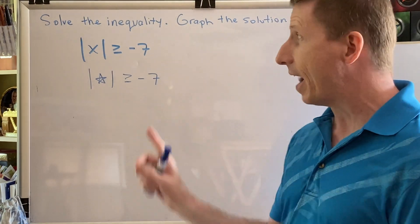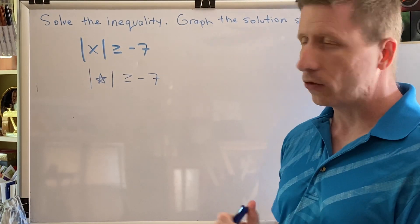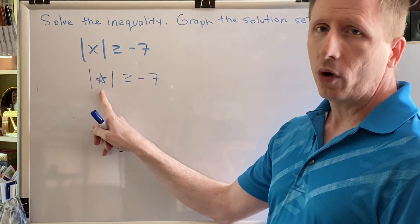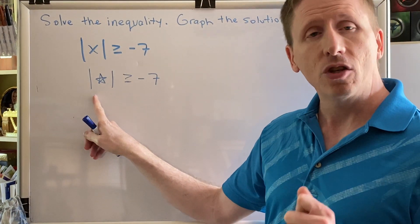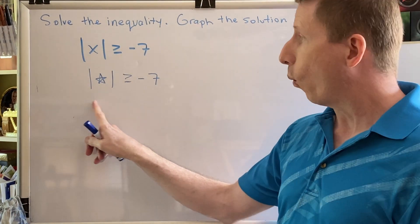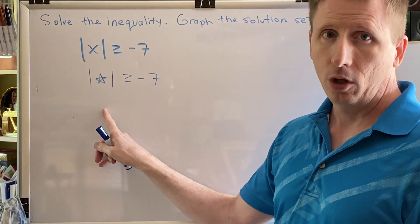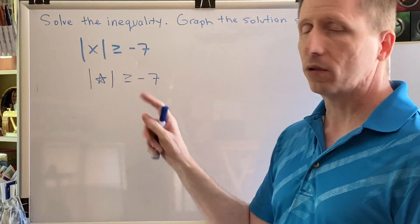So we have a negative here. Let's think our way through this. What number or numbers can you replace star with so that when you take the absolute value, the result is greater than or equal to negative 7?